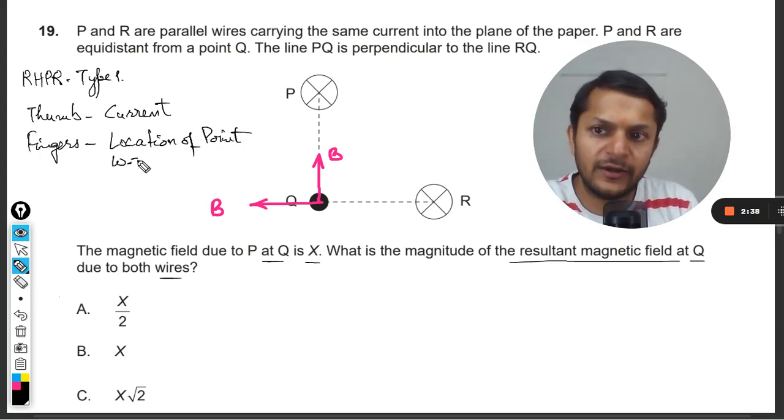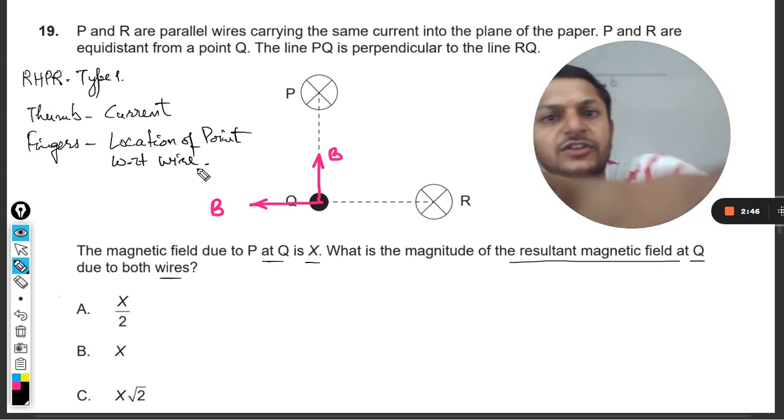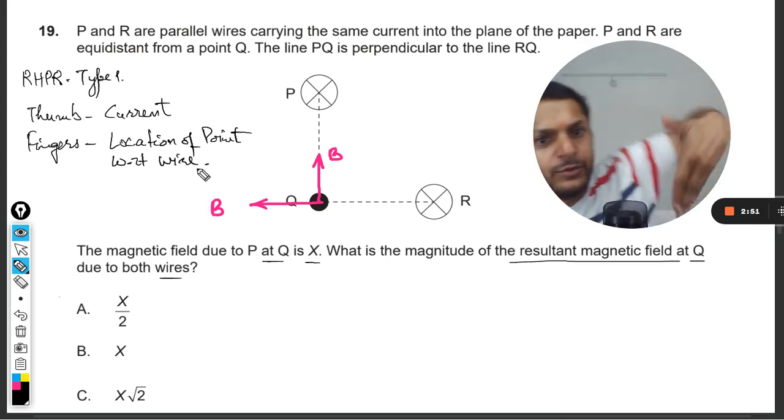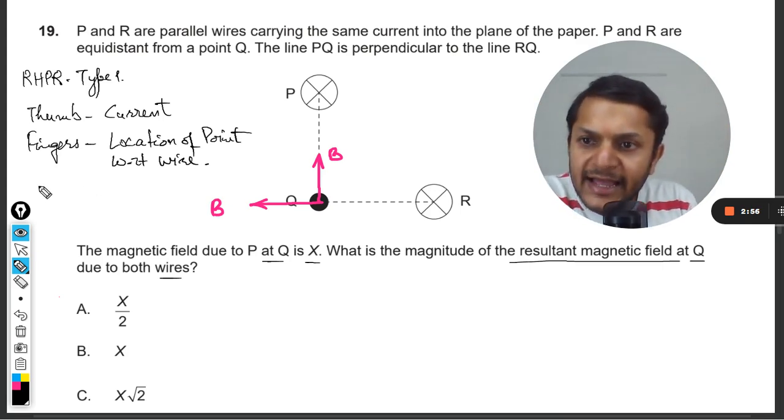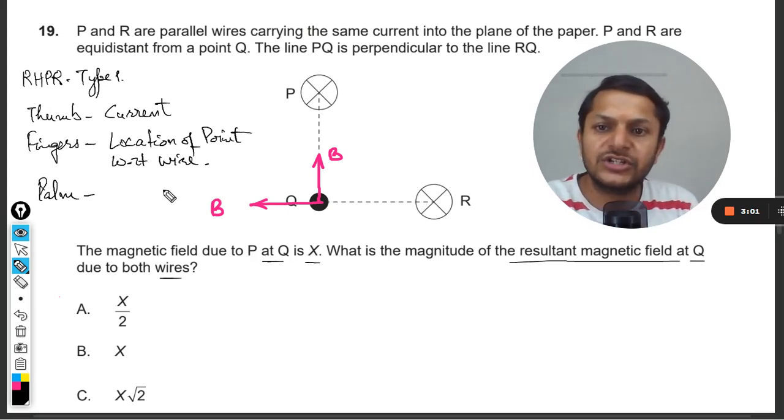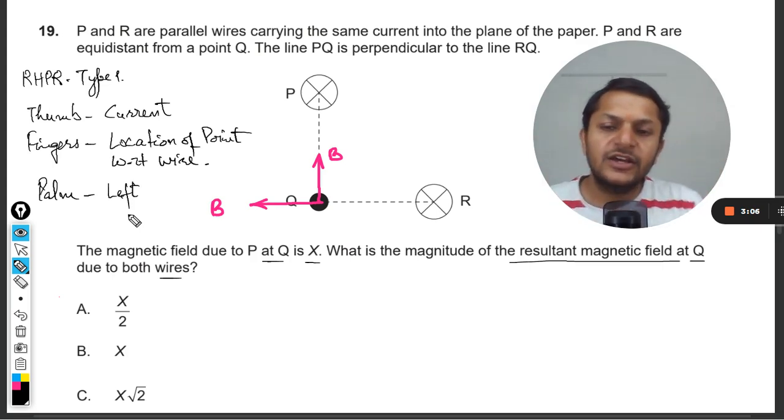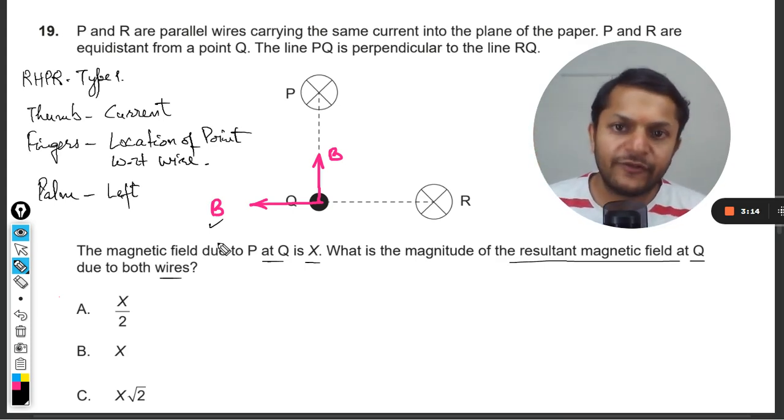Fingers will be pointing towards the location of point with respect to wire. So you have to literally use your palm like this and literally touch the screen. Try to find where the point is. In this case, the point Q is downward, so I would be keeping hand like this so my fingers will be pointing downwards. If that is the case, the palm will be pointing towards left hand side. So if you do like this, accordingly you have found the direction of the magnetic field due to the wire P. Similarly, by using the same rule, you can find the magnetic field due to R.